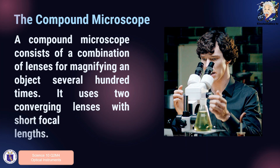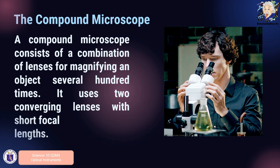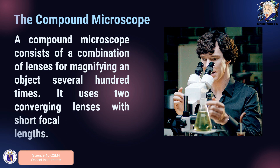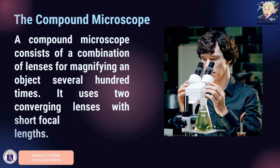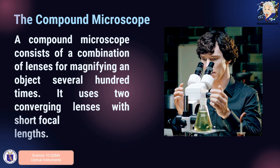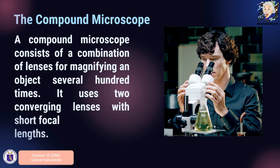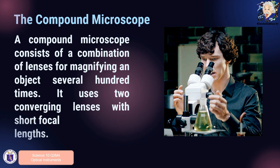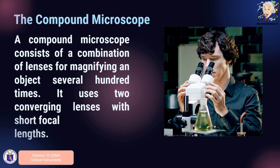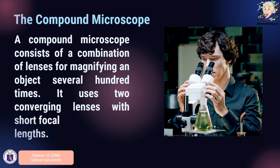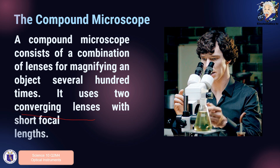The next instrument we are going to talk about is the compound microscope. Its function is to study microorganisms. The compound microscope consists of a combination of lenses for magnifying objects several hundred times. For the type of lens, the microscope uses two converging lenses with short focal length — in short, it uses two convex lenses.